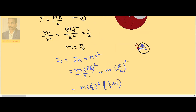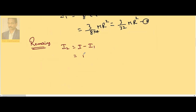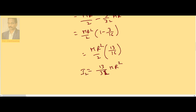Now we need the moment of inertia for the remaining portion. The moment of inertia of the remaining portion, I2, equals I minus I1. So I2 = MR²/2 − 3MR²/32. Taking MR²/2 common gives 1 − 3/16, which equals MR²/2 × 13/16 = 13MR²/32. This is the moment of inertia of the remaining portion.